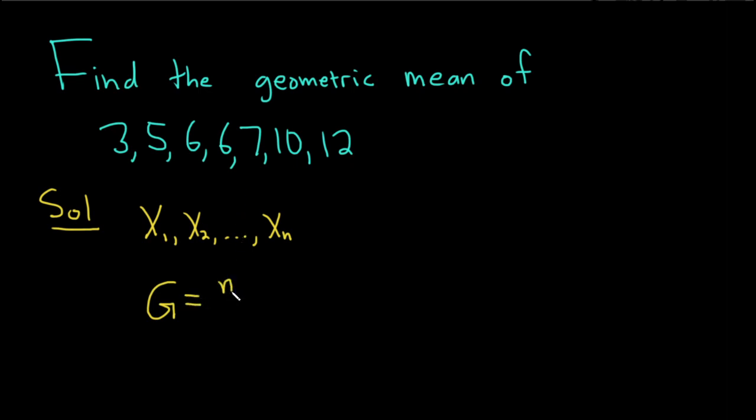And it's basically the nth root of the product of all of these numbers. So x1 times x2 times dot dot dot times xn.